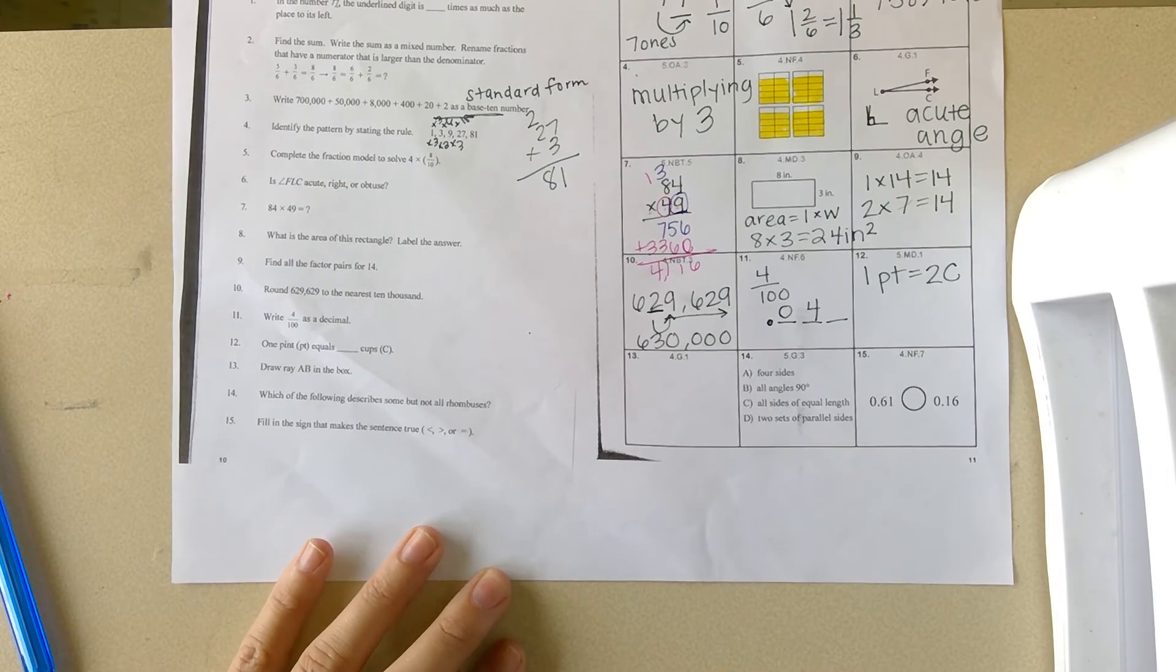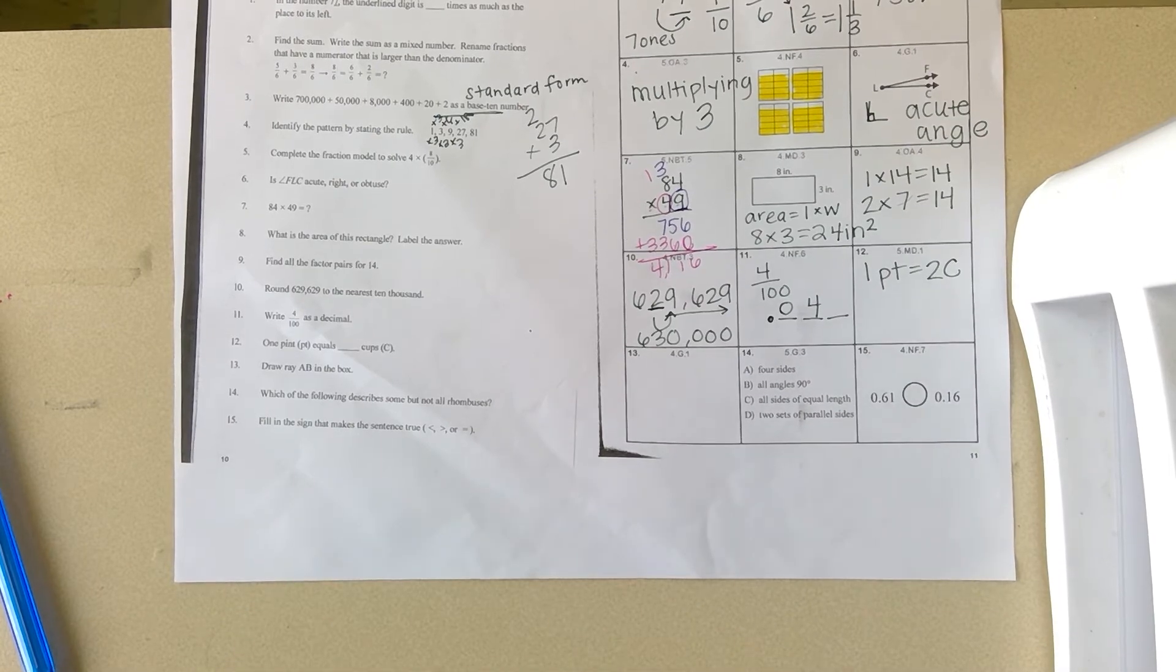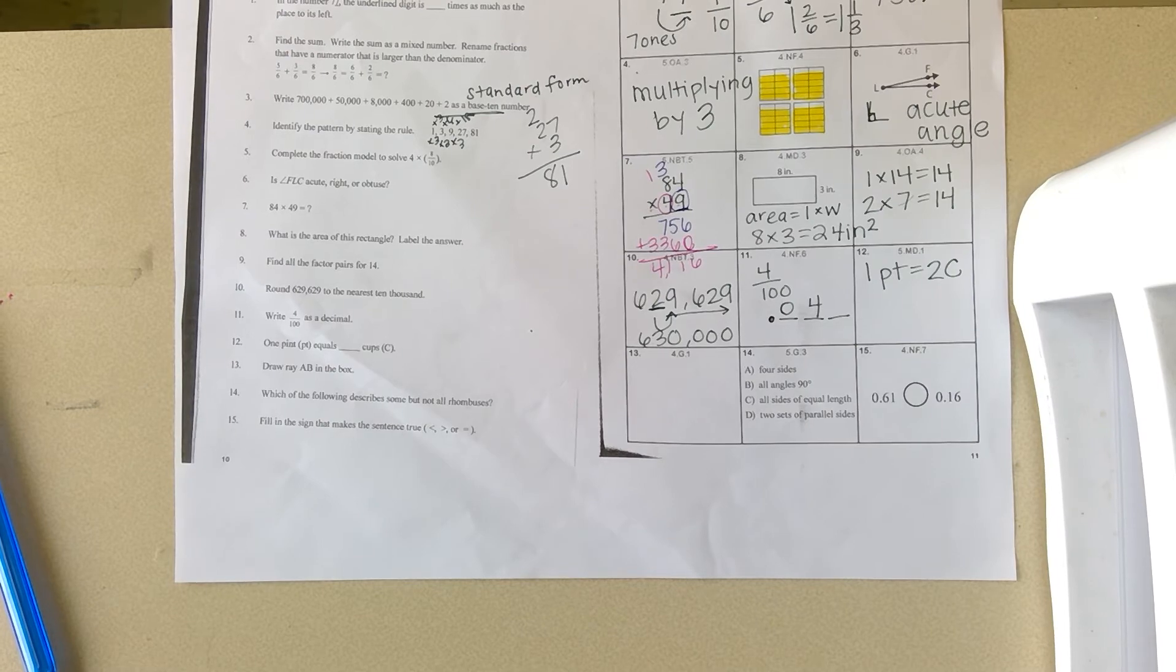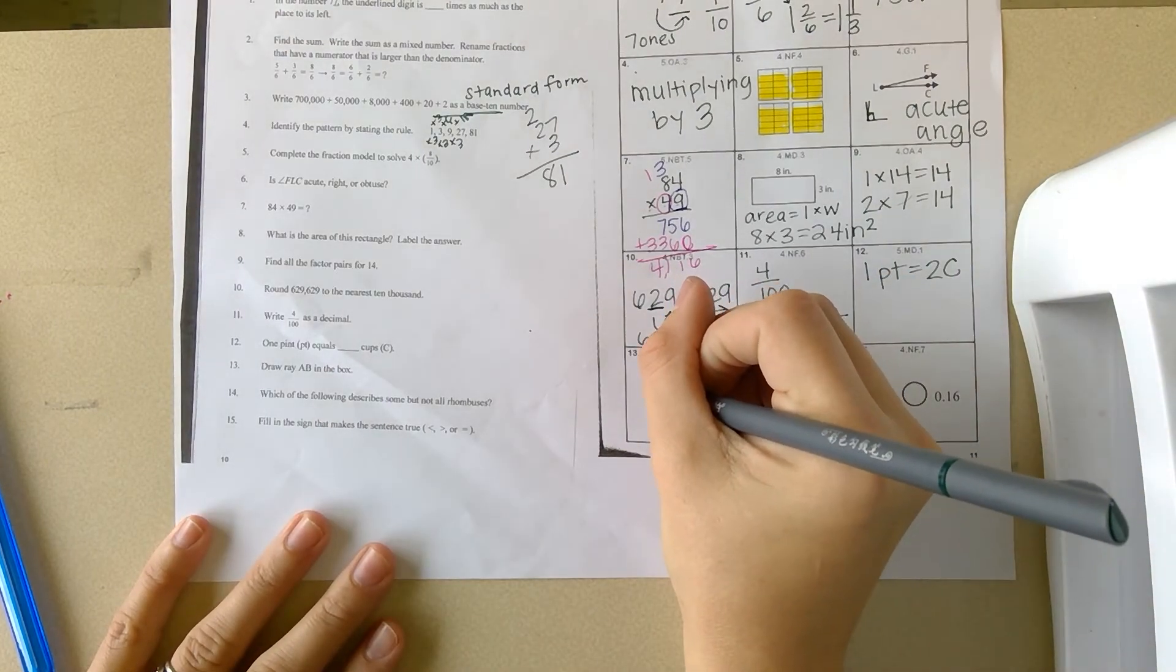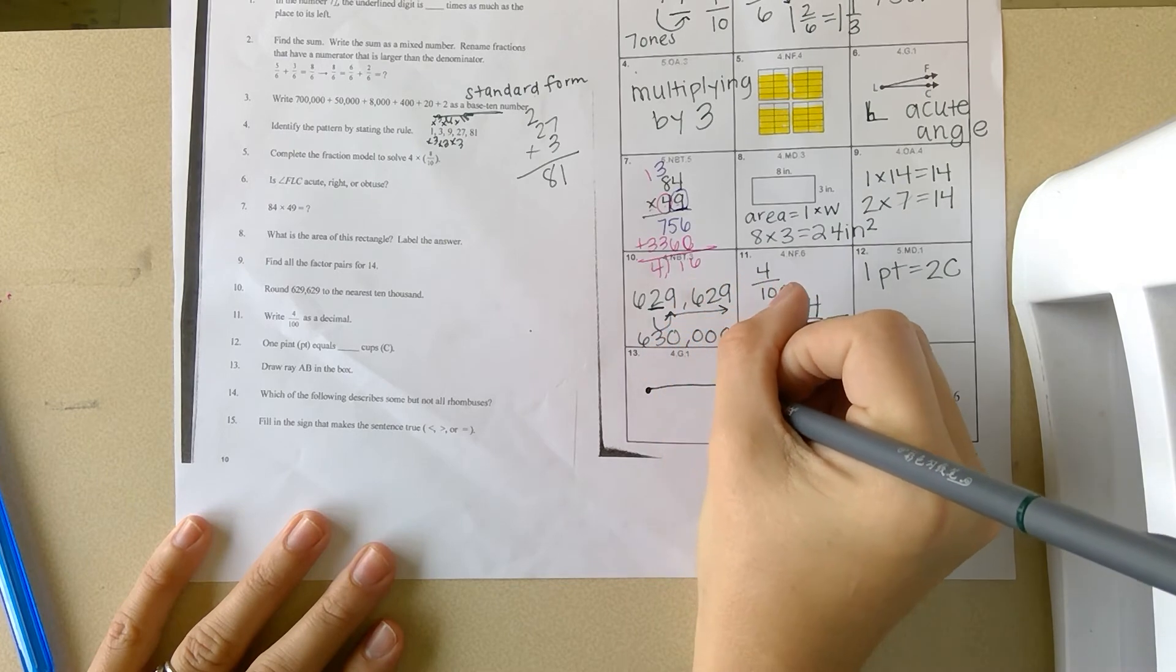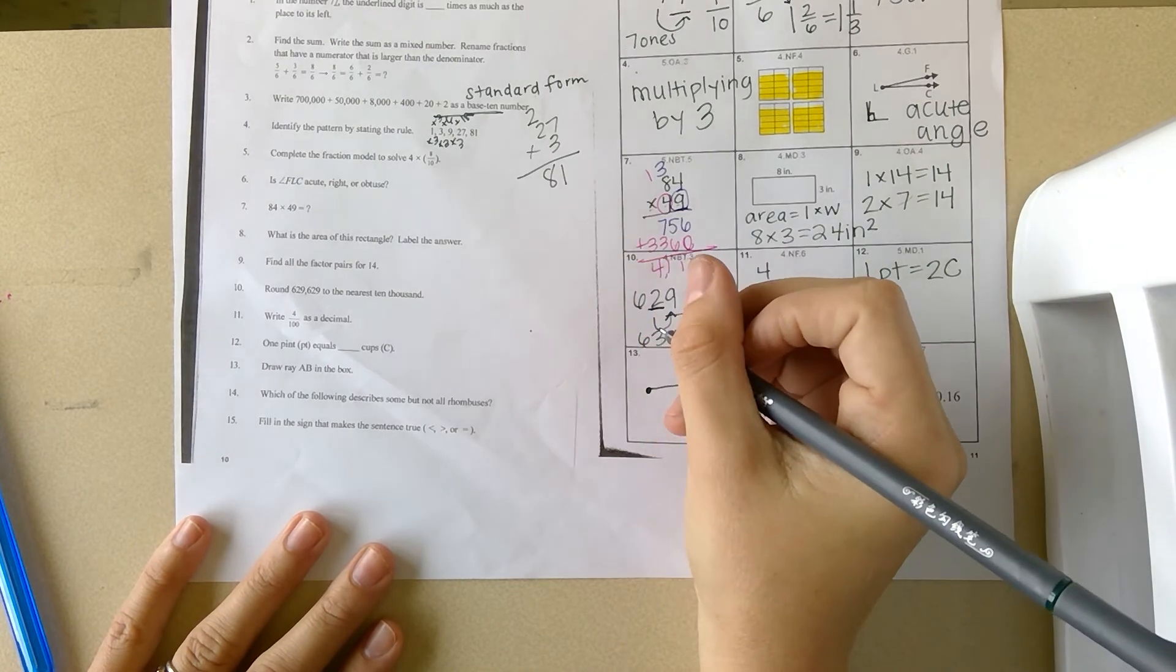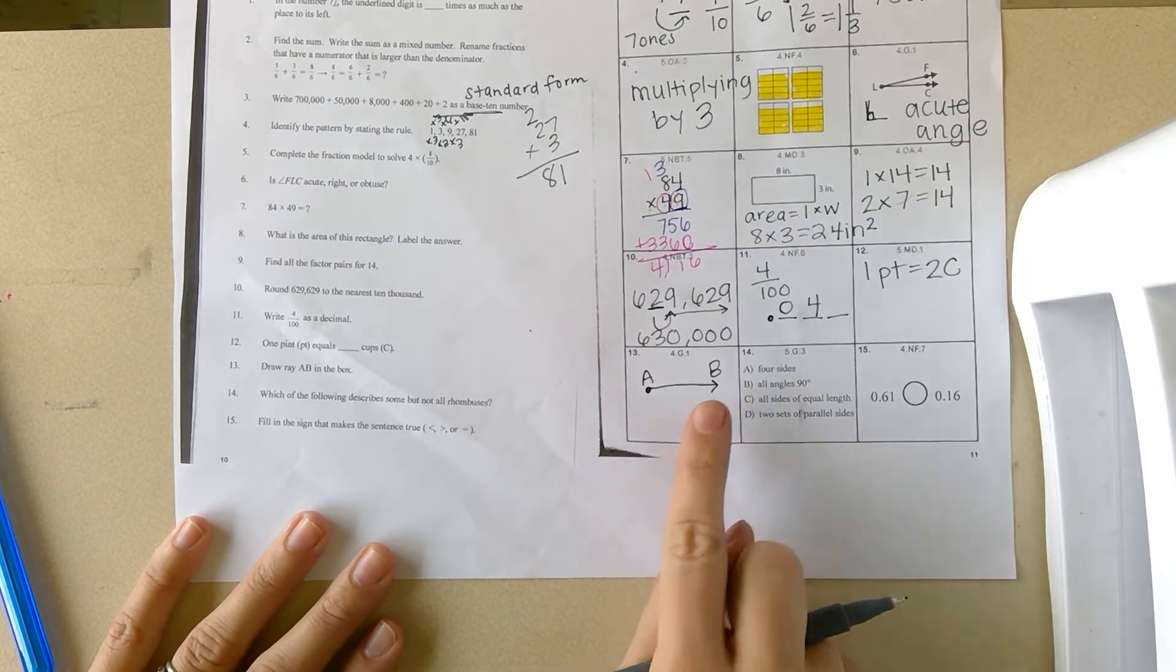Thirteen: draw ray AB in the box. We want to draw a ray. A ray is when you have a point and a line off of that point showing the arrow that it goes on and on. So it would be A, B. You would label A, B.